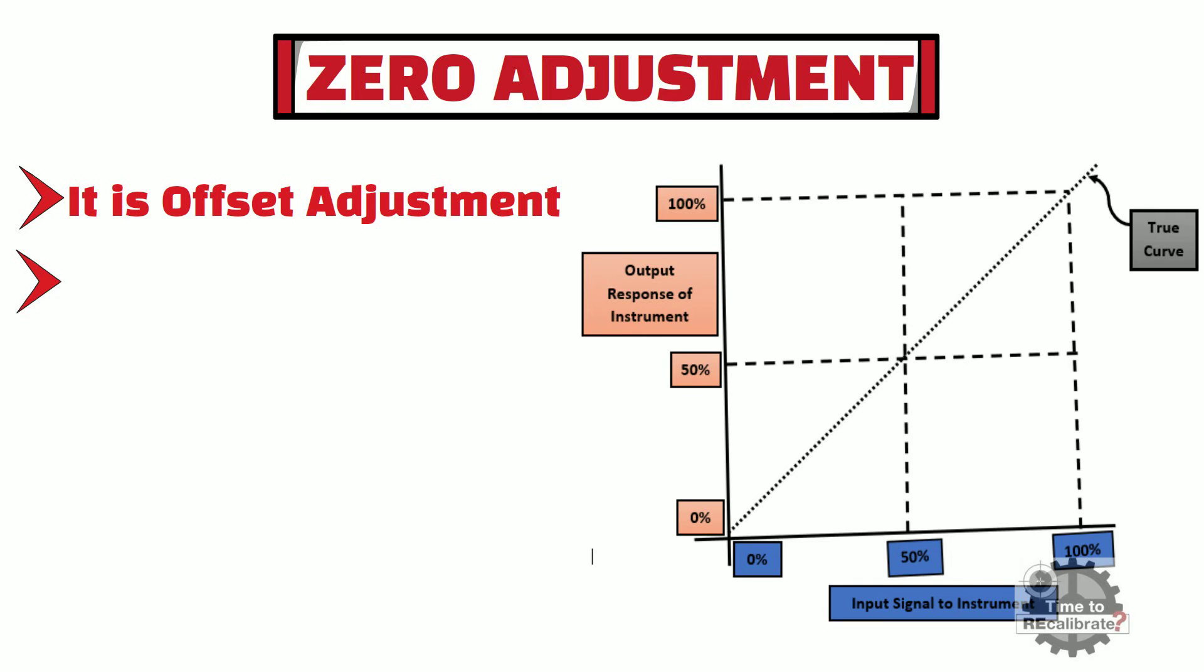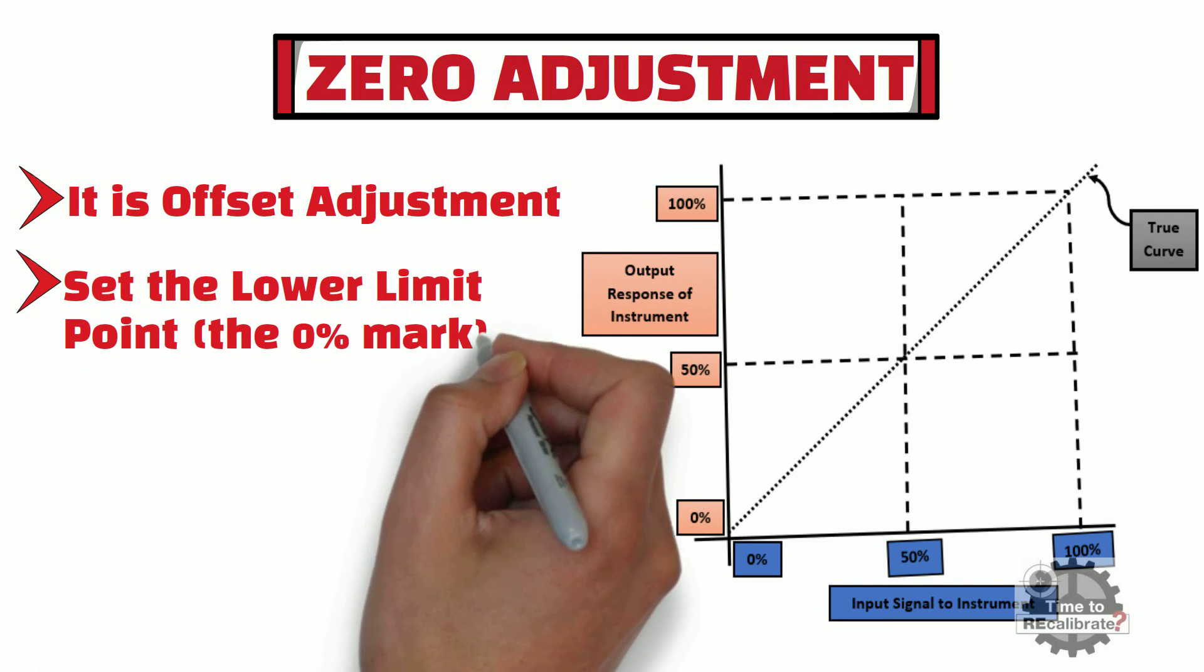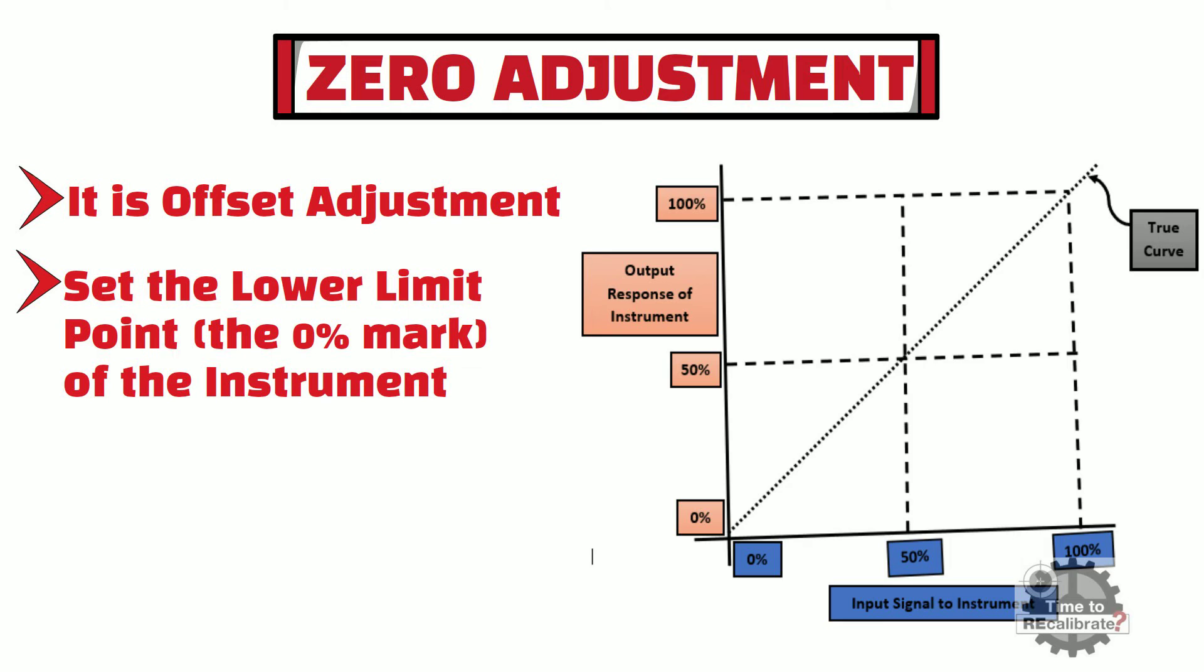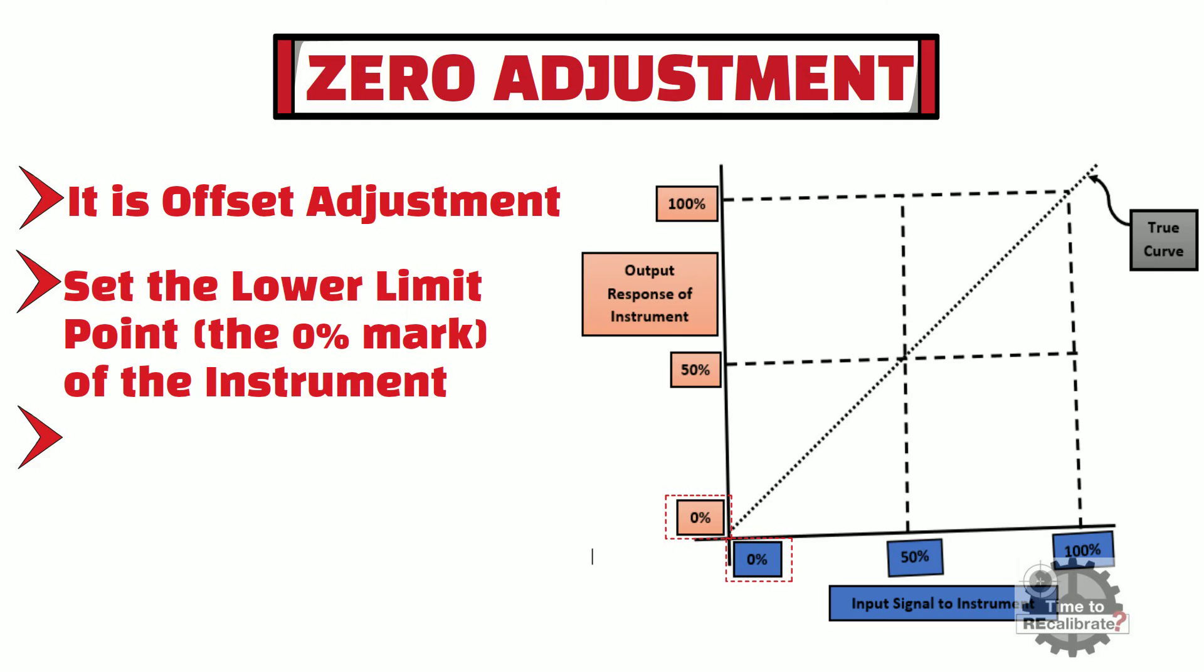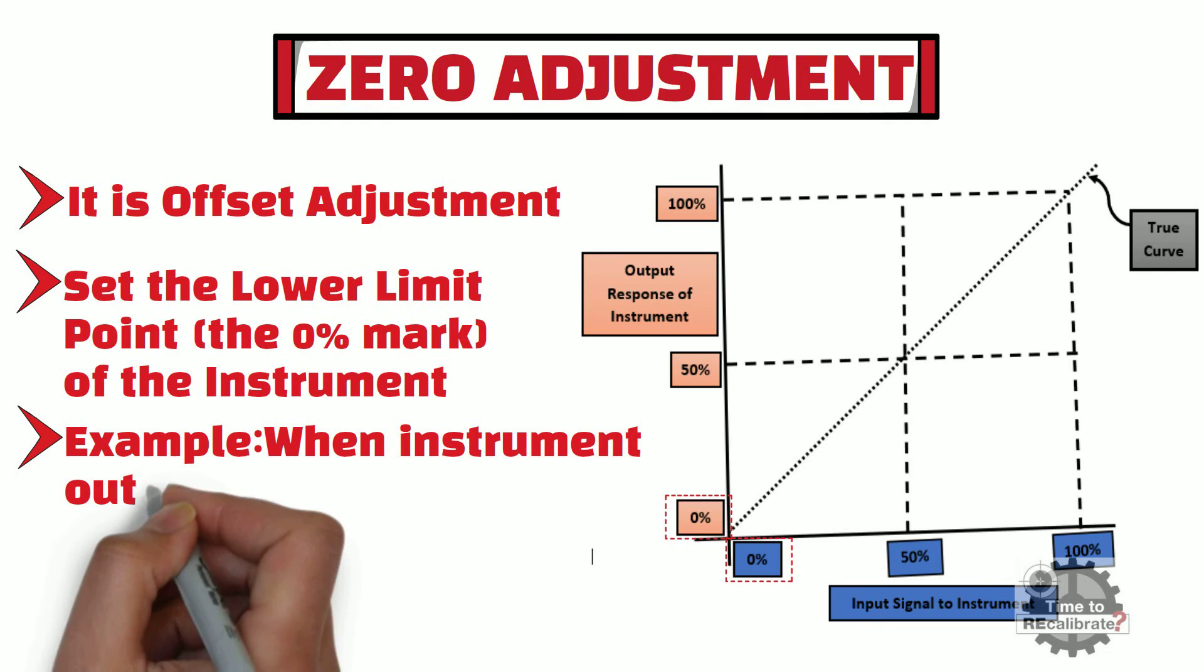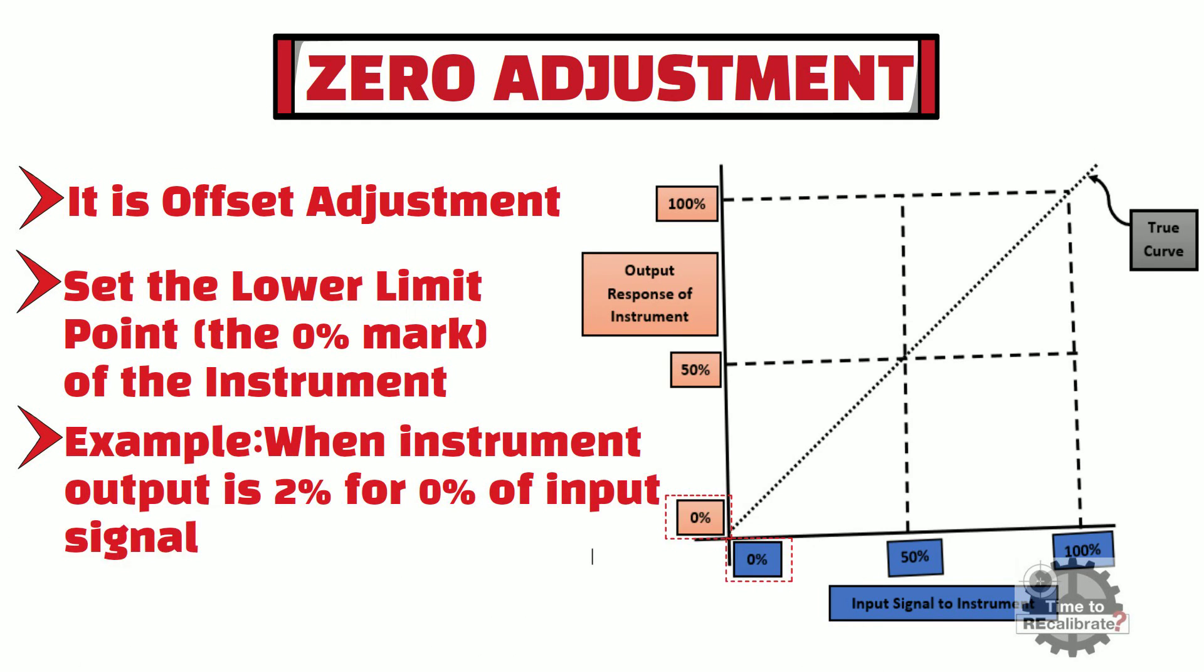In order to set lower limit point, 0% of input signal is given to instrument, and output of instrument is adjusted to 0%. For example, when instrument output is 2% for 0% of input signal, in this case, this instrument requires zero adjustment.